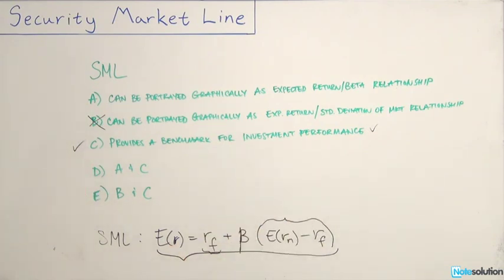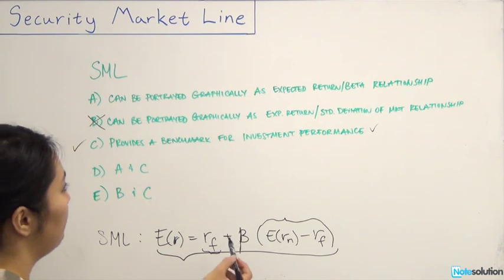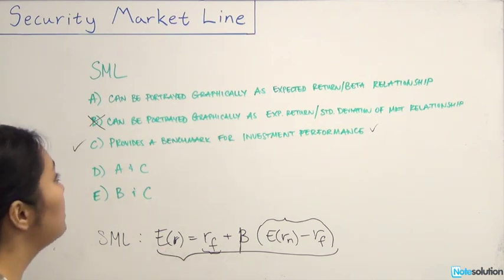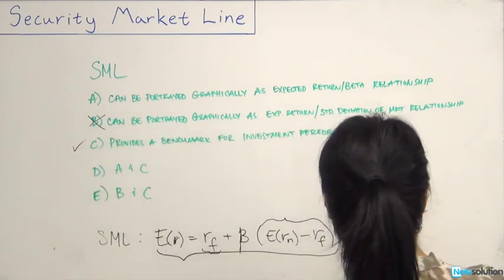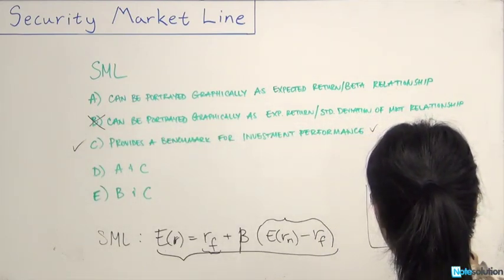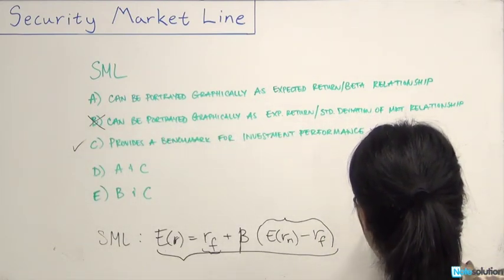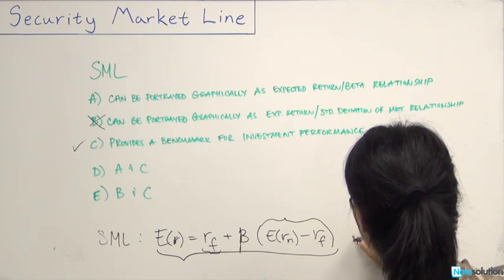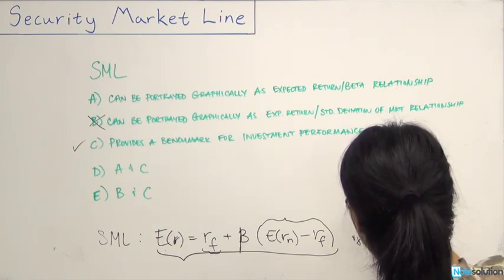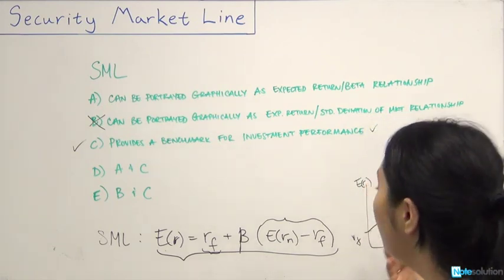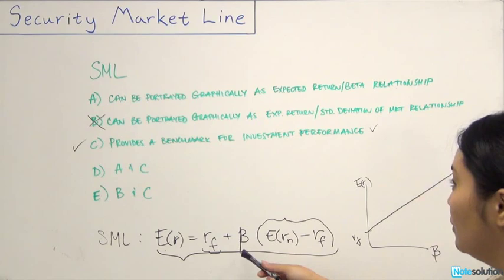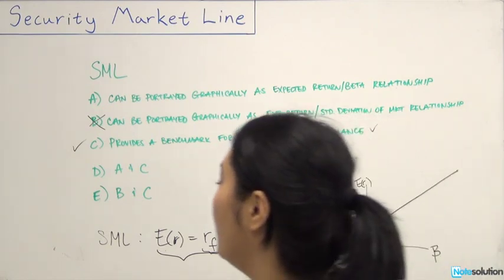It is the expected return and beta relationship. So if you were to graph it, it would look something like this. You would have beta here and expected return. And this is the risk-free rate. And your graph would look something like this. And the slope would depend on the relationship to the market, which is beta. So A is correct as well.